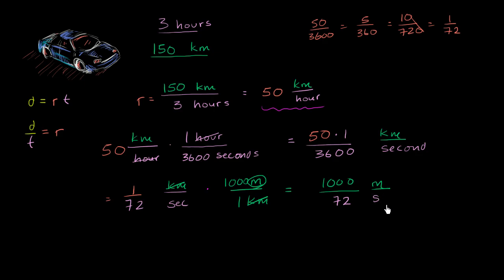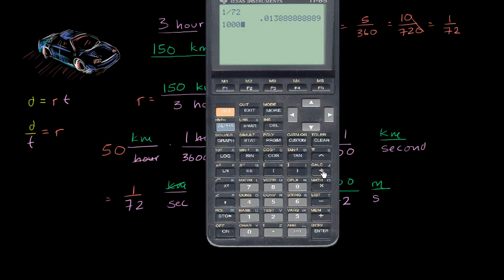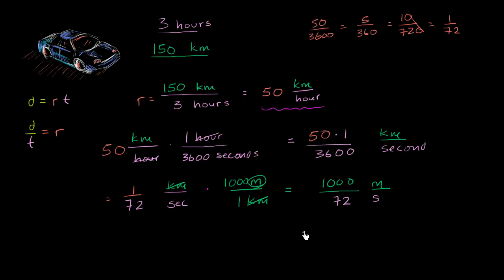So we get 1,000 divided by 72, which is approximately 13.9. So this is approximately 13.9 meters per second. I can visualize that — I can imagine how far 13.9 meters is and covering that distance in one second. So this also seems like a reasonable way to express the rate. I could say this thing is going 50 kilometers per hour, or roughly 13.9 meters per second.